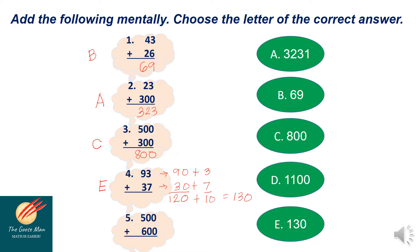Next, number five. I have 500 plus 600. I'll add 5 and 6, which will give me 11, and just copy the two zeros. So I have 1100, and the answer is letter D.